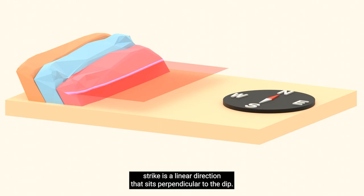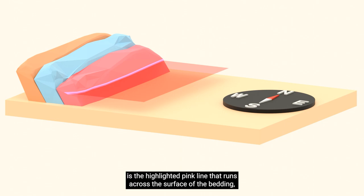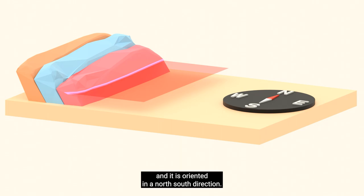Our strike line in this instance is the highlighted pink line that runs across the surface of the bedding, and it is oriented in a north-south direction.